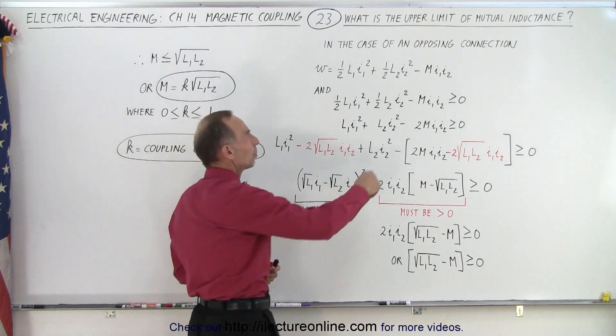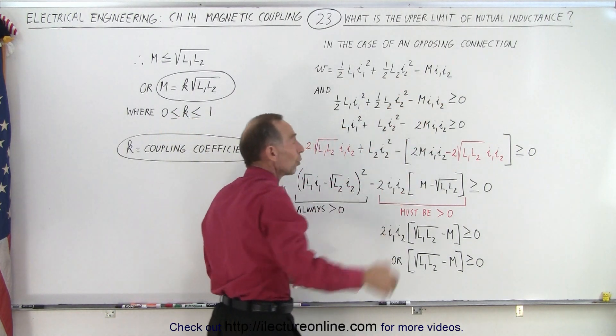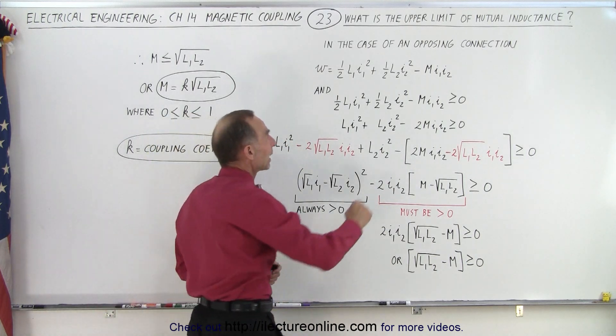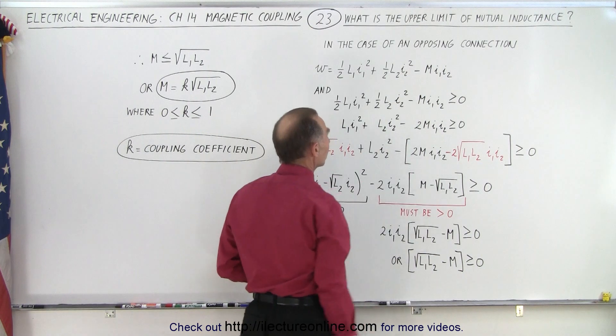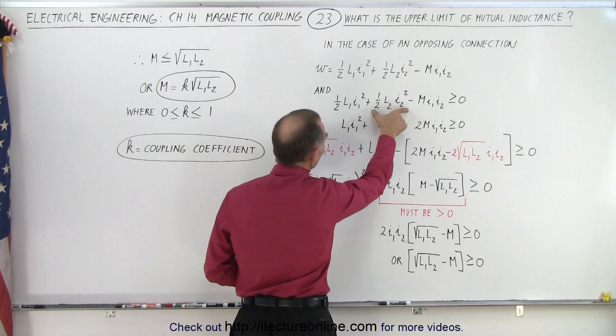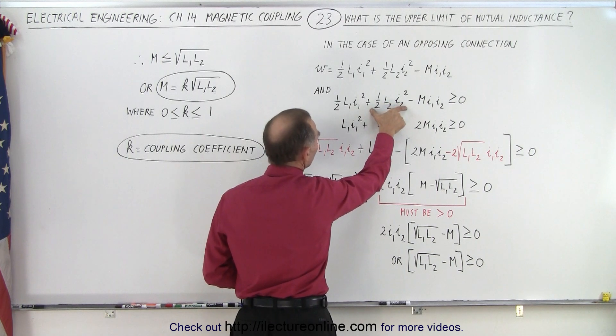Of course if this is a plus then everything is a plus and that always is going to be greater than zero. So the limiting factor can be found by making this a minus and therefore an opposing connection. Now when you look at this equation right here, the first two terms absolutely have to be bigger than or equal to zero.